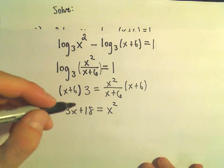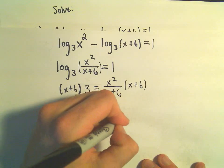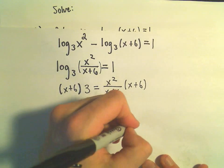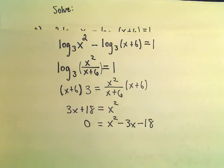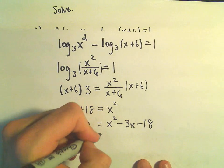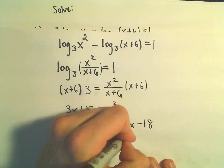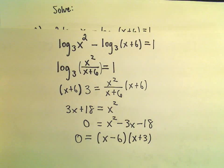And now this is a quadratic. I'm going to make the left side 0 by subtracting 3x from both sides and by subtracting 18 from both sides. And I think this is a quadratic that's going to factor. So I believe this factors as x minus 6 and x plus 3.